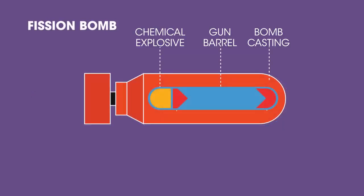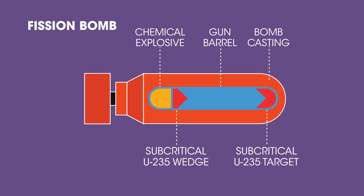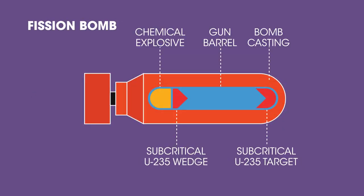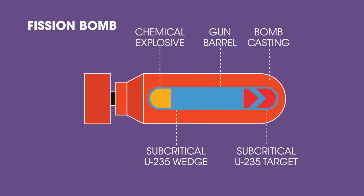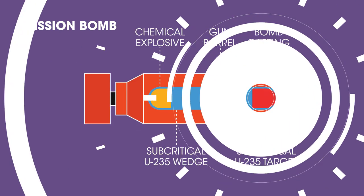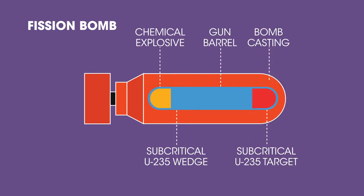In a fission bomb, two sub-critical masses of uranium or plutonium are quickly pushed together using conventional high explosives, which results in an uncontrolled chain reaction with an almost instant release of huge amounts of energy as heat, light, and gamma rays.